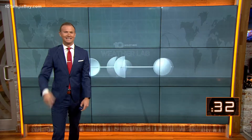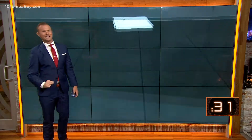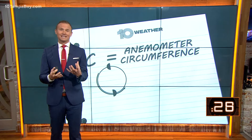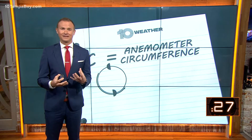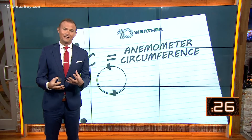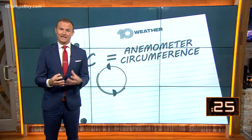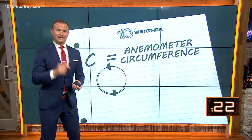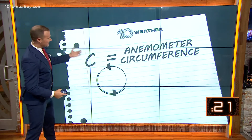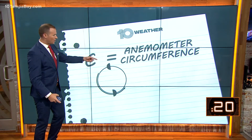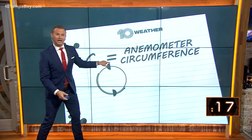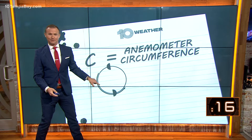So how does this tie into math? There's always a way to bring math into the conversation. We actually use math to calculate how fast that wind is spinning the anemometer. All you need is a tape measure, or you just know the circumference around the circle of that anemometer.